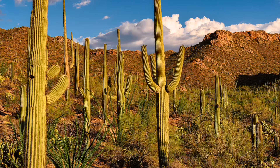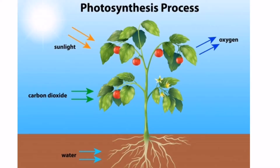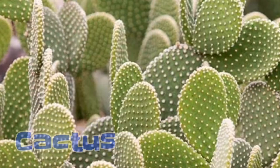In many cases, desert plants have no leaves at all. The process of photosynthesis, which normally occurs in green leaves, is carried out in the stems. That is why they themselves are green with a pigment chlorophyll. Cactus is a desert plant.